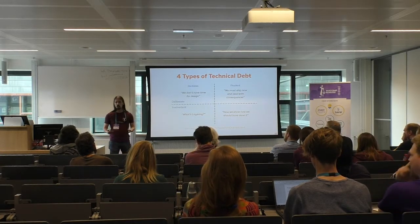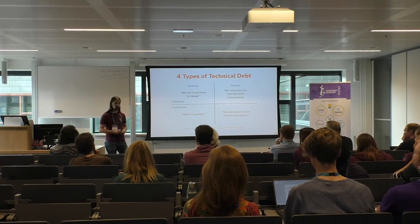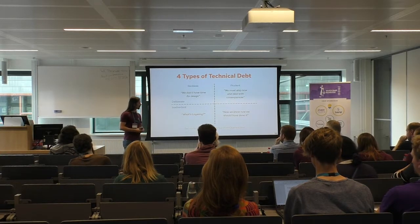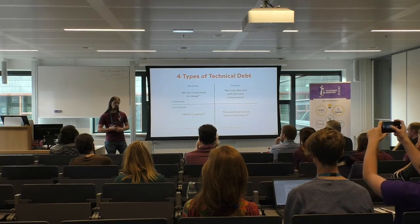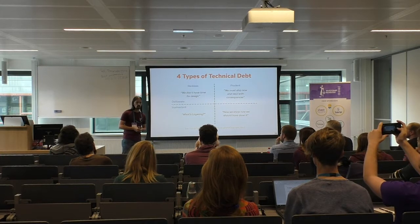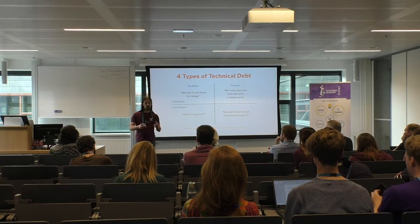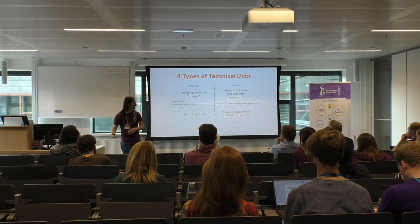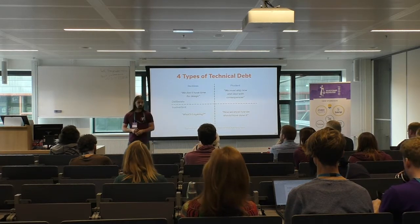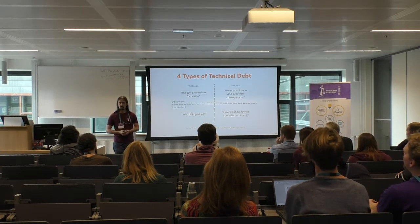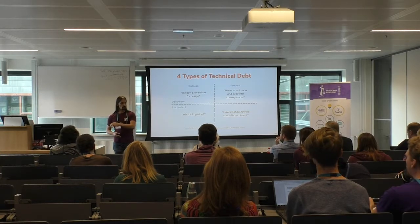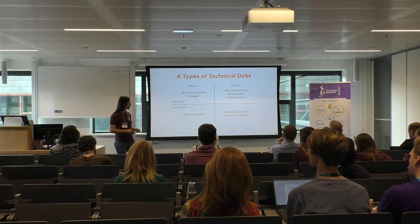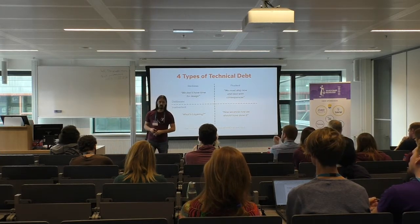Reckless, inadvertent debt is when you don't know any better — you try your best but what you're doing is not according to best practices and creates problems without you even knowing. Prudent, deliberate debt is very common when deadlines are in play: you cut corners to make your deadline, but you always need to keep in mind that you'll have to repay that later. Prudent, inadvertent debt is when you've finished development and already know how you could have done it much better — and it's very hard to completely avoid.